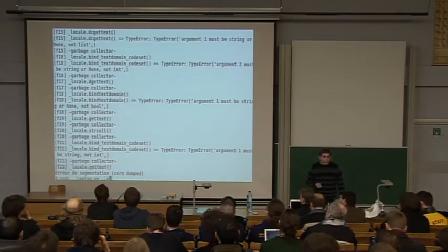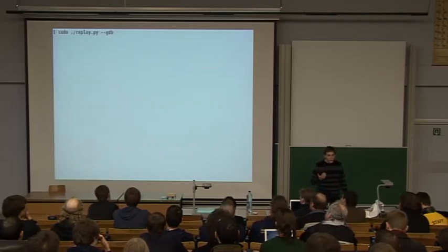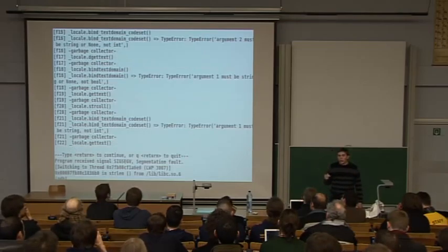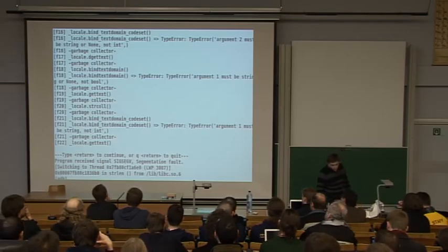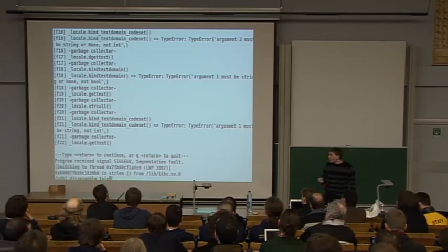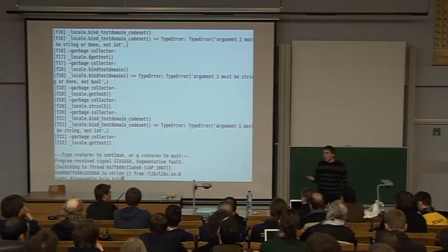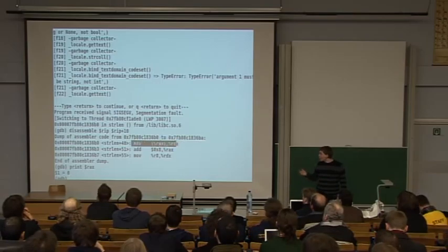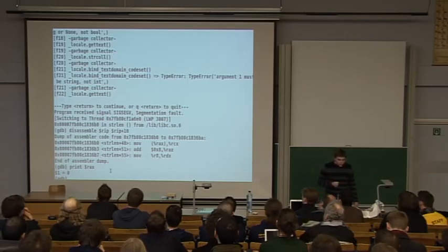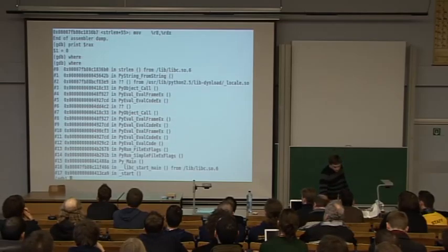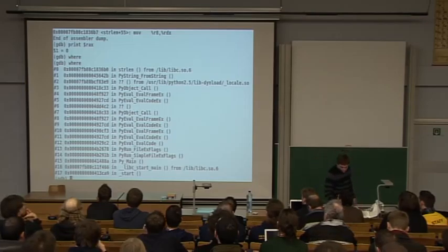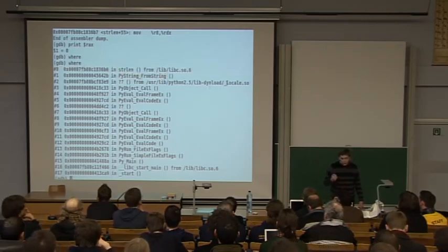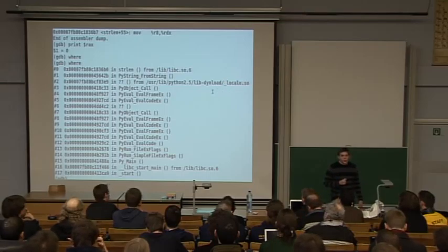It's very important to replay the crash because you need, for example, to run it in a debugger. If you add --gdb, you are able to replay the crash in GDB, where you can get more information — for example, the backtrace. You can also read the assembler code, dump registers, etc. Here there is an invalid read with the EAX register, which is null. And you have also the backtrace using 'where'. Here you have a bug in the locale module — some information is missing because you need to recompile the program with debug symbols.